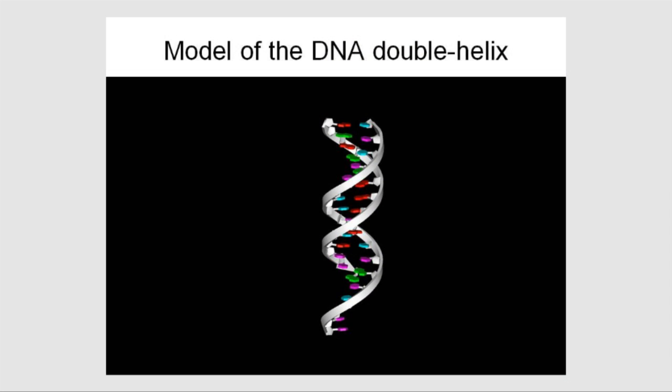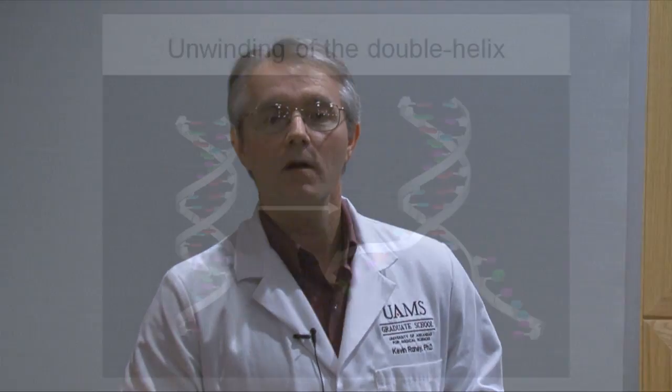DNA, of course, is the molecule that stores and transfers genetic information. As such, it's been referred to as the master molecule because it sort of directs the functions of other molecules. The DNA structure shown in this image in cartoon form has one strand of DNA wrapped around a second strand — that's why it's referred to as the double helix. The information content that DNA stores is actually stored in the interior of the helix, and in order to utilize that information, a cell needs to unwind that DNA.